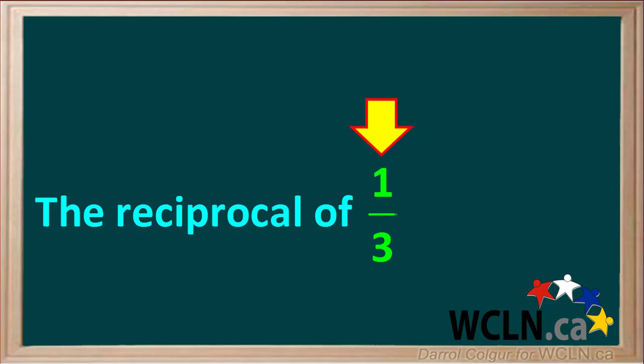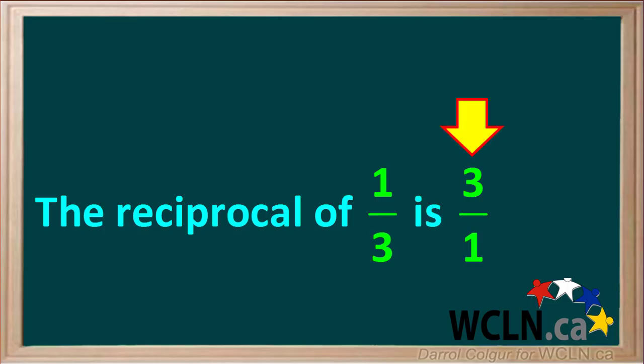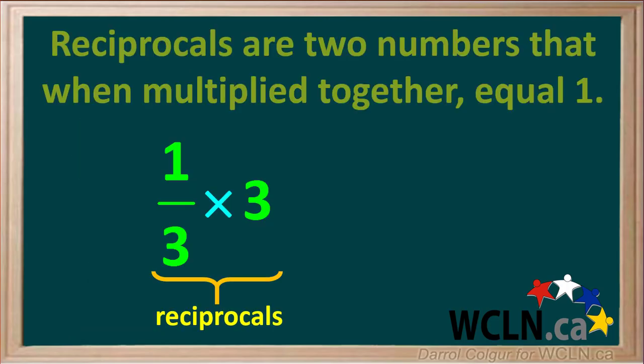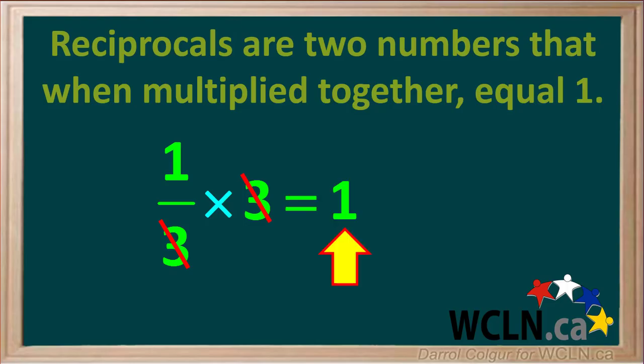Similarly, the reciprocal of the fraction 1/3 is equal to 3/1, which is also equal to the whole number 3. Remember, reciprocals are two numbers that when multiplied together equal 1. We can show that 1/3 and 3 are reciprocals by multiplying them together. When we multiply them, the 3 on top cancels out the 3 on the bottom, so the product is just 1, which confirms that 1/3 and 3 are reciprocals.